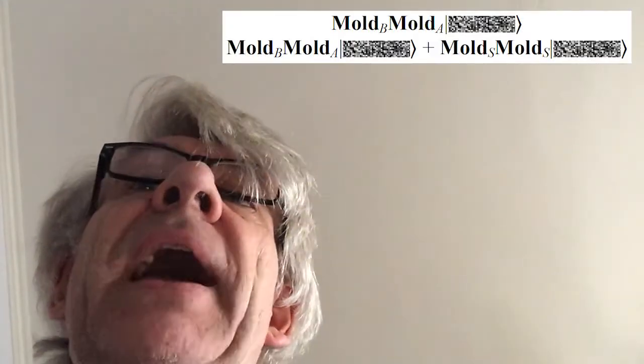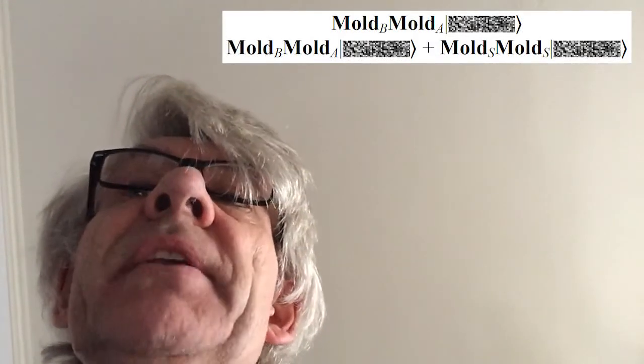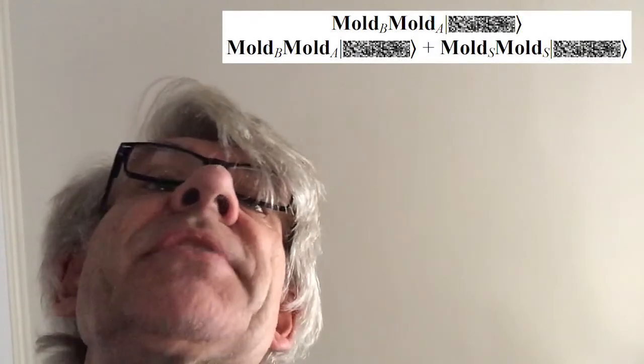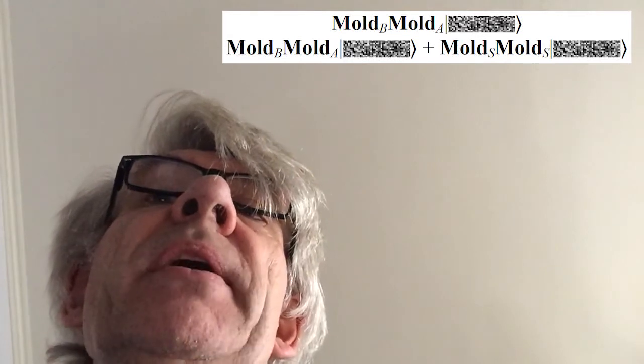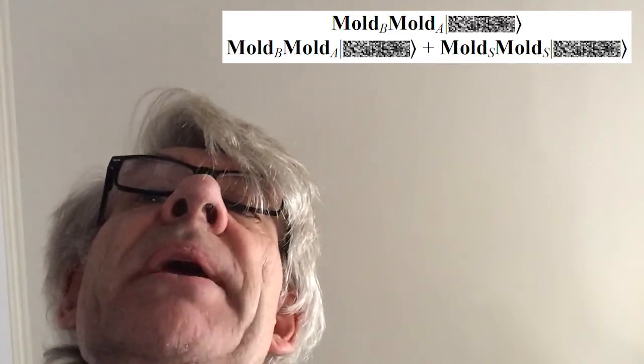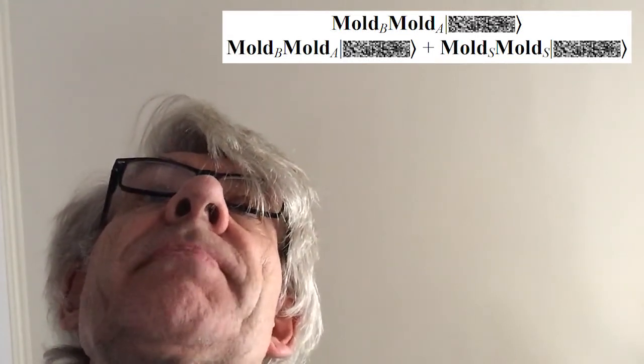We can mould an American encyclopaedia and a British encyclopaedia, say, into the vacuum. We can mould in some Shakespeare and add it to make a superposition.